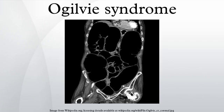Ogilvie's syndrome is the acute dilation of the colon in the absence of any mechanical obstruction in severely ill patients. Colonic pseudo-obstruction is characterized by massive dilatation of the cecum and right colon on abdominal X-ray. It is a type of megacolon, sometimes referred to as acute megacolon, to distinguish it from toxic megacolon.